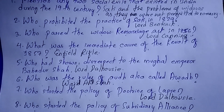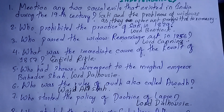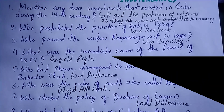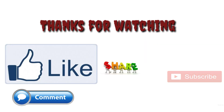Last question: Who started the policy of subsidiary alliance? Write your answer in the comment section below — even if you are not sure, you can do a guesswork. These were some of the important objective questions from the Revolt of 1857. Apart from these, study four to five reasons covering political, economic, military, and social and religious causes for long questions. Please subscribe and give a thumbs up, and write any board exam queries in the comment section.